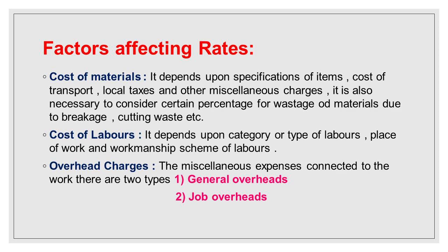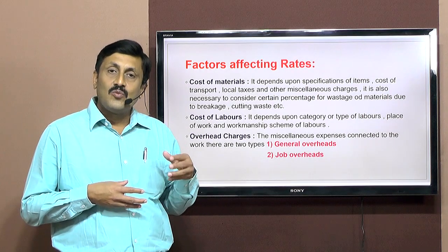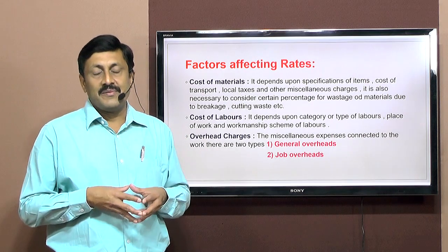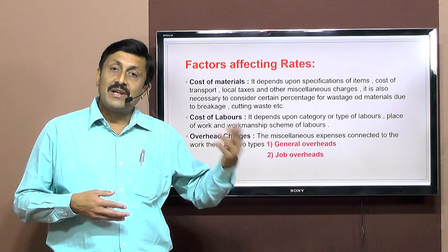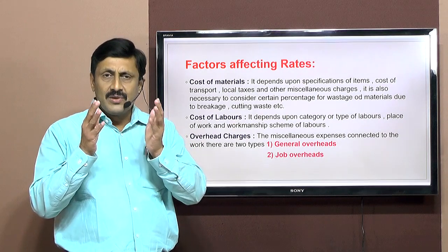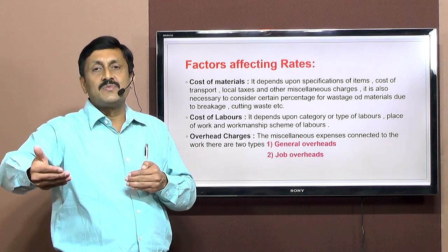For example, when we consider the cost of flooring, drawings give you exactly how much is the area of flooring, but by knowing only the area we cannot find out the cost. The estimator needs to know exactly what type of flooring is required and what are the specifications. If we go for rough Shahabad tiles, the rate will be different. If we go for Kota flooring, rate will be different. If we go for ceramic tile flooring, the rate will be different. So cost of materials depends upon specifications of materials.